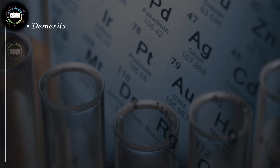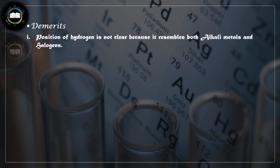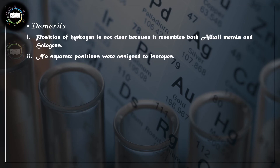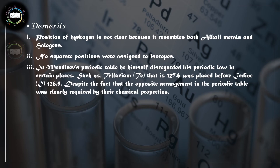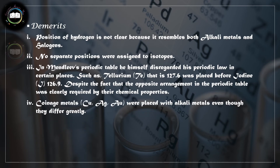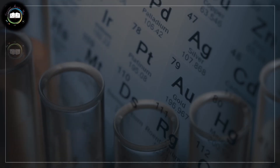There were also some demerits: the position of hydrogen was not clear, isotopes were not assigned separate places, and Mendeleev himself disregarded his periodic law in certain places — for example, tellurium with atomic weight 127.6 was placed before iodine with atomic weight 126.9. Additionally, dissimilar elements such as the coinage metals copper, silver, and gold were placed along with alkali metals.